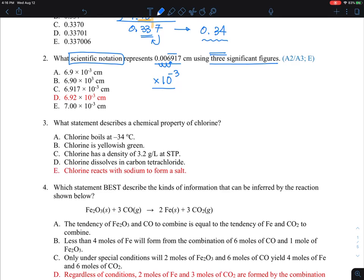So that's what we are going to keep. So this number transforms now to 6.92, and so therefore the answer is 6.92 times 10 to the minus 3. So D is the answer.